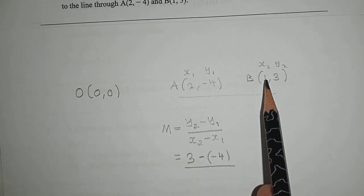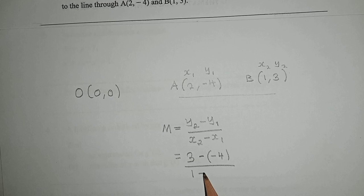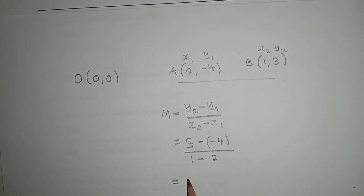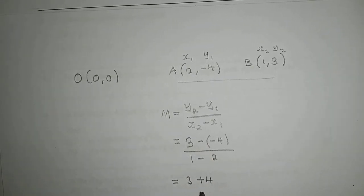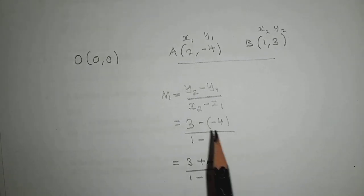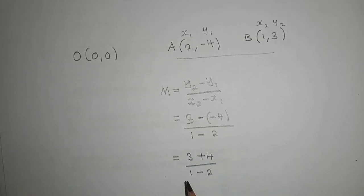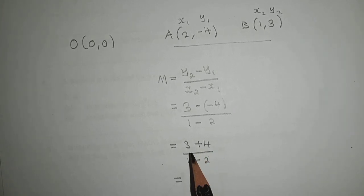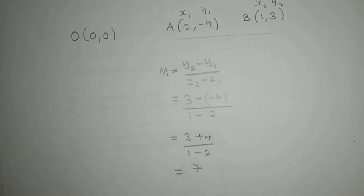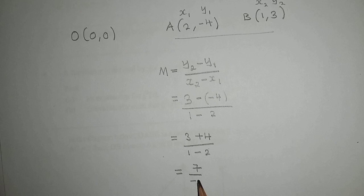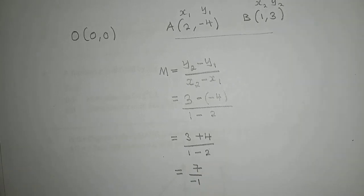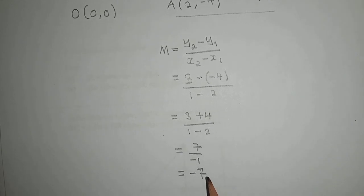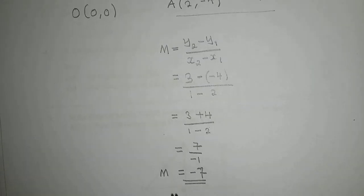Over x subscript 2 which is 1 minus x subscript 1 which is 2. We work this out: 3 plus 4 over 1 minus 2. This gives us 7 over -1, which equals -7. So m equals -7.